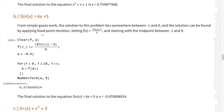Problem b: sin(x) = 6x + 5. From simple guesswork, the root lies somewhere between negative one and zero. We define the function f(x) accordingly, set a third variable equal to the midpoint, run the same fixed point iteration evaluations, and evaluate to nine digits of precision. We get x = -0.9708 as our final solution — the same answer we got with the bisection method.